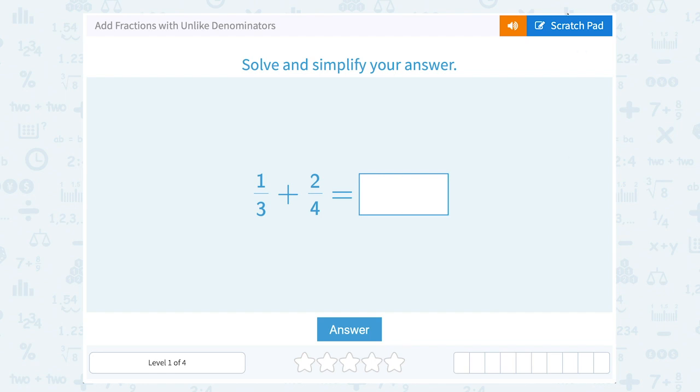The first thing you want to keep in mind is that when you're adding or subtracting with fractions, you always need to find a common denominator. Common means the same. Denominator means the number in the bottom of your fraction. So I need to make the number on the bottom of these fractions the same or common.